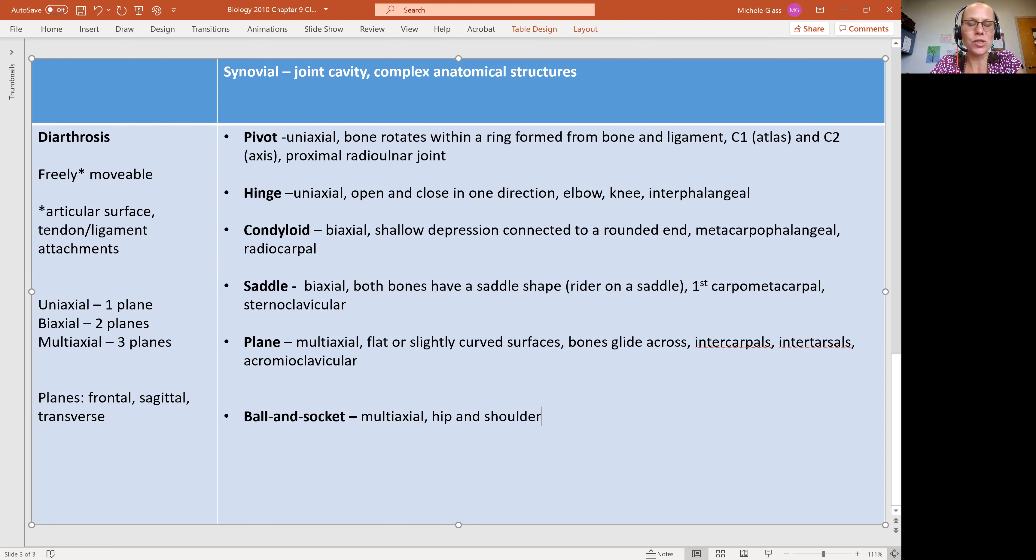So what we see is your hip and your shoulder do have the widest range of movements. They can move in all three planes. And because the socket in the shoulder is more shallow, the shoulder actually provides more range of motion than the hip.